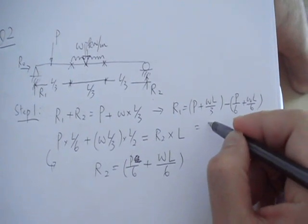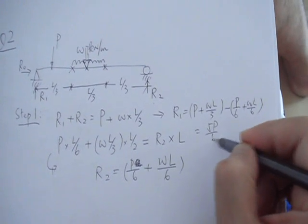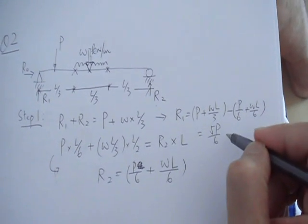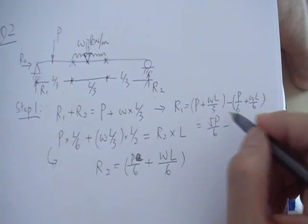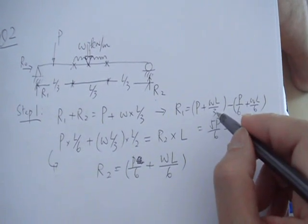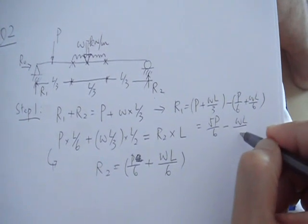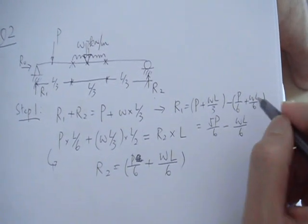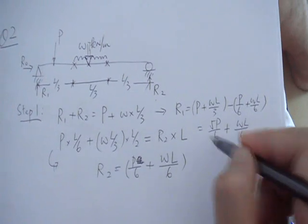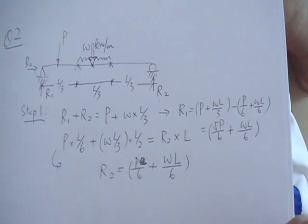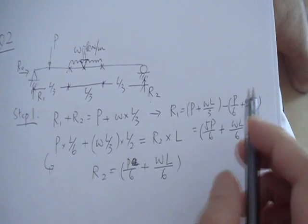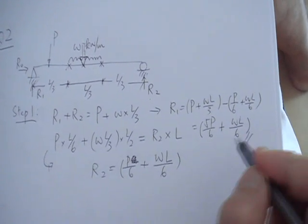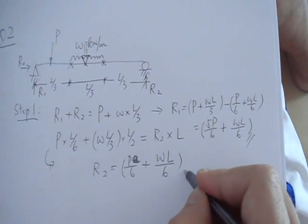That will give you R1 as P plus wL over 3 minus P over 6 plus wL over 6, which gives you 5P over 6 plus wL over 6. So that's your R1 and that's your R2.